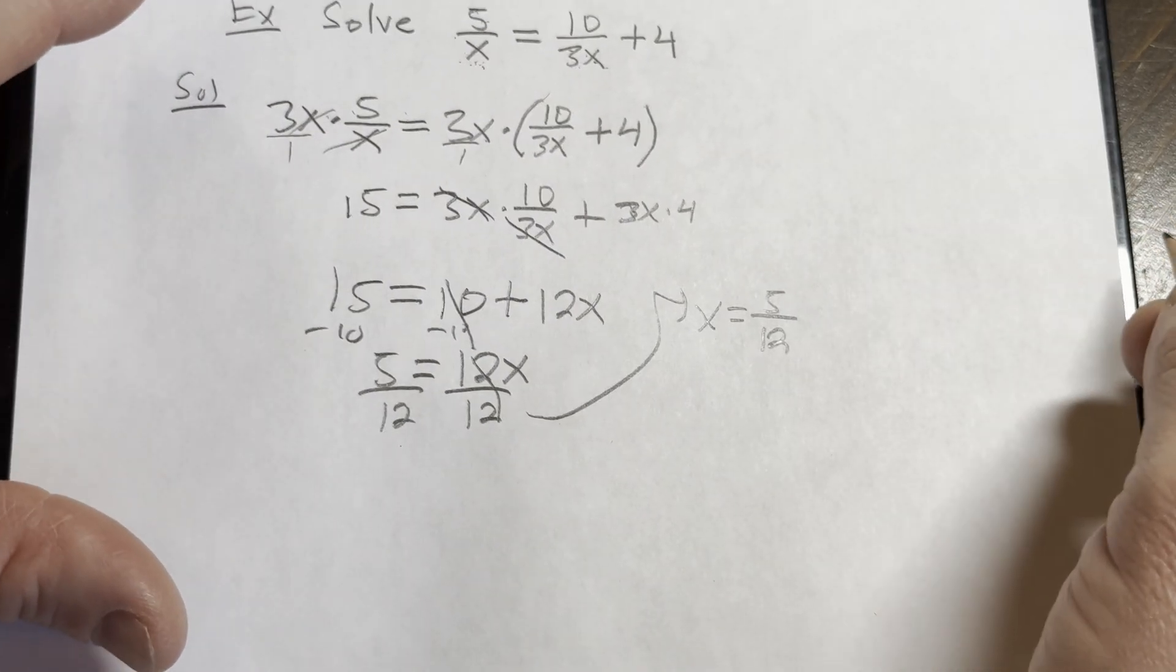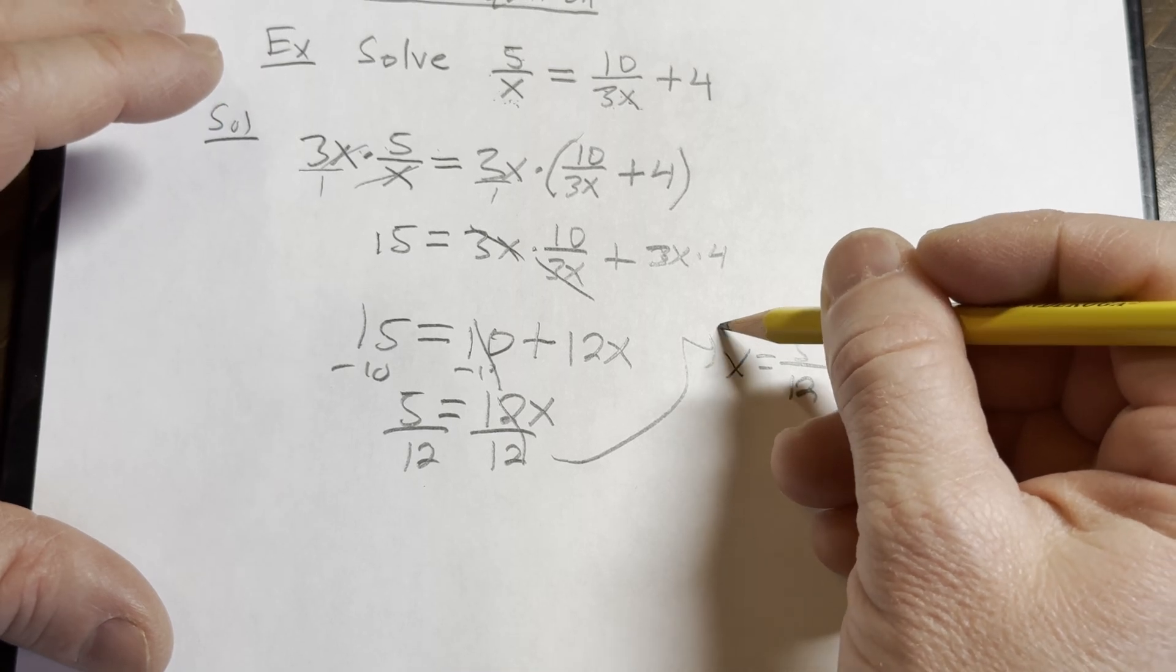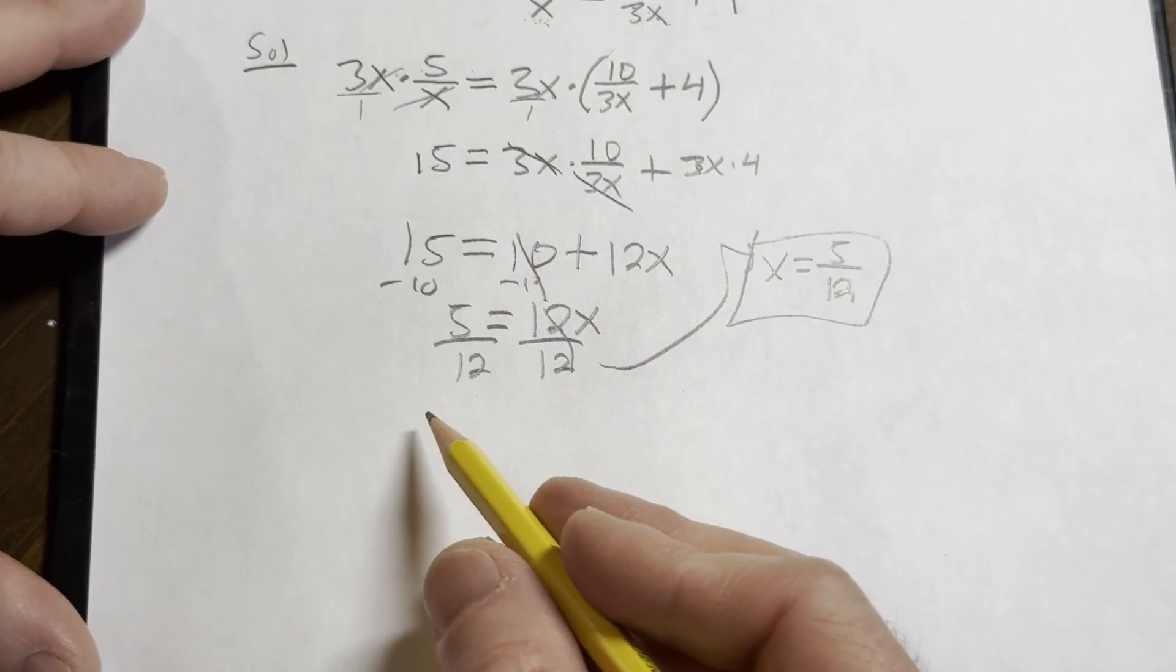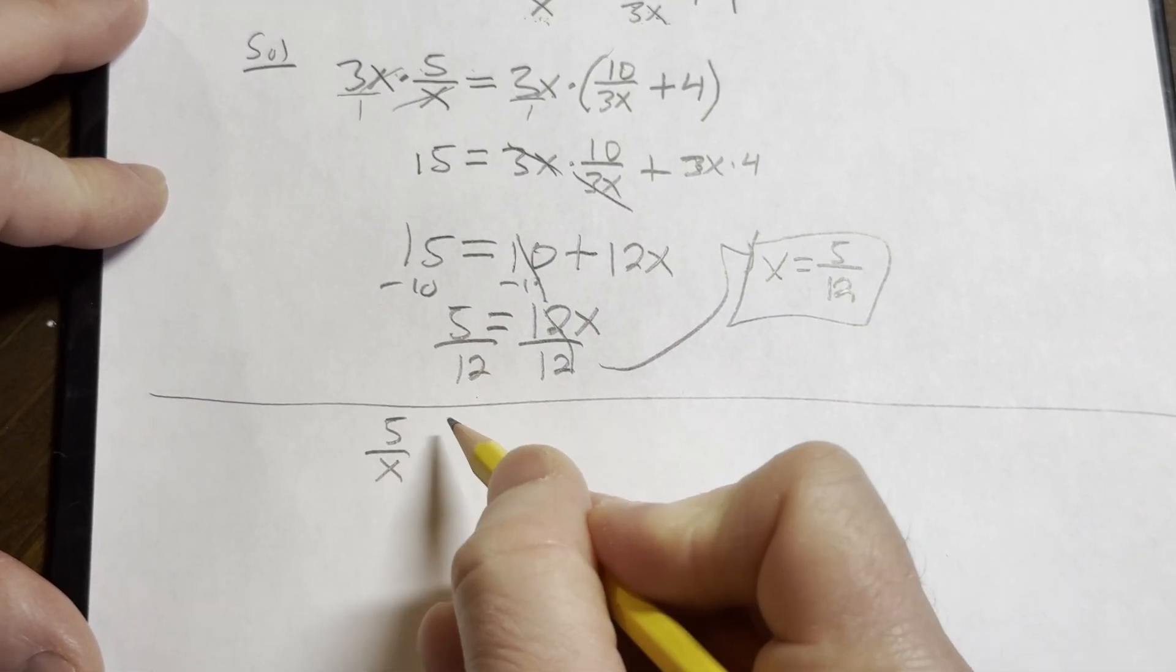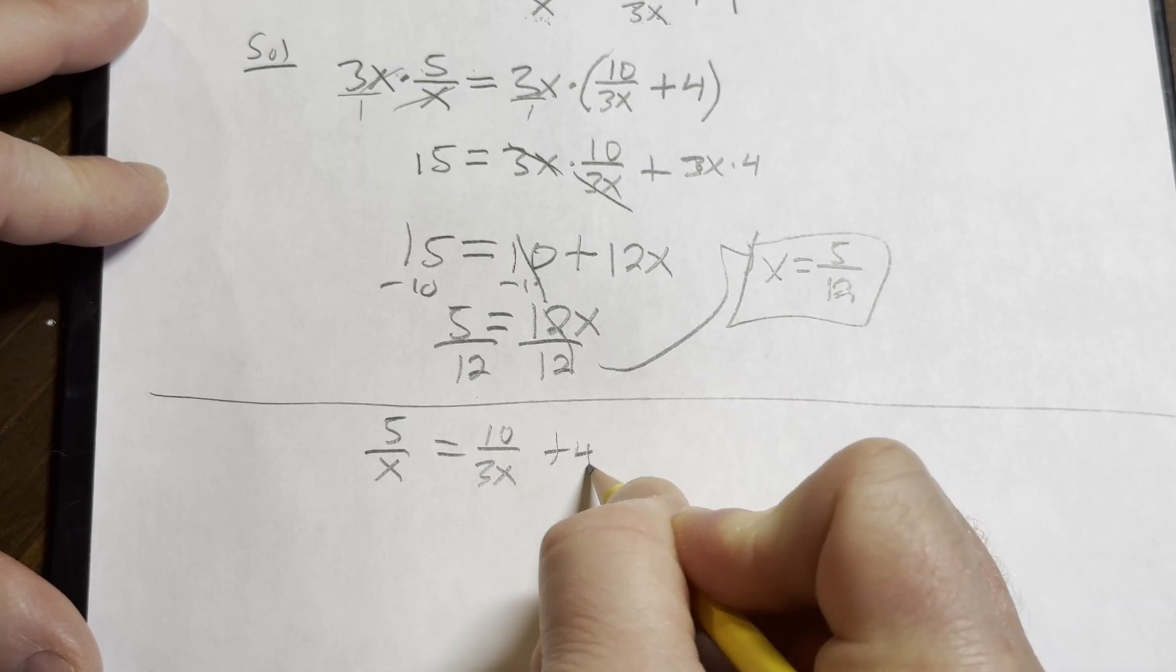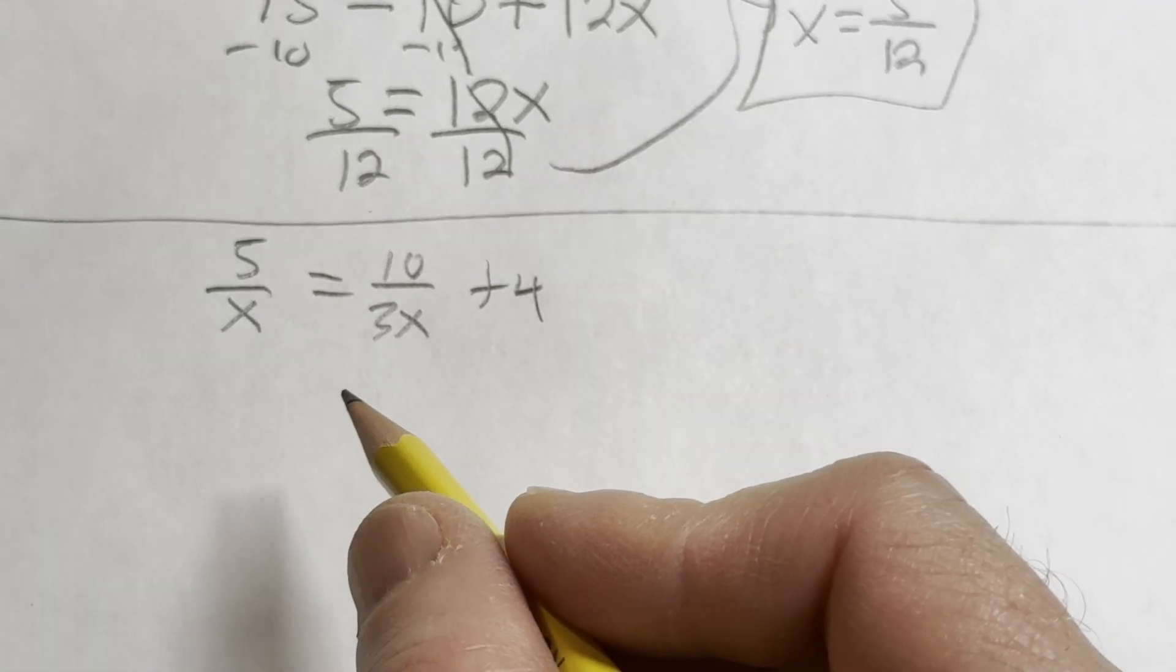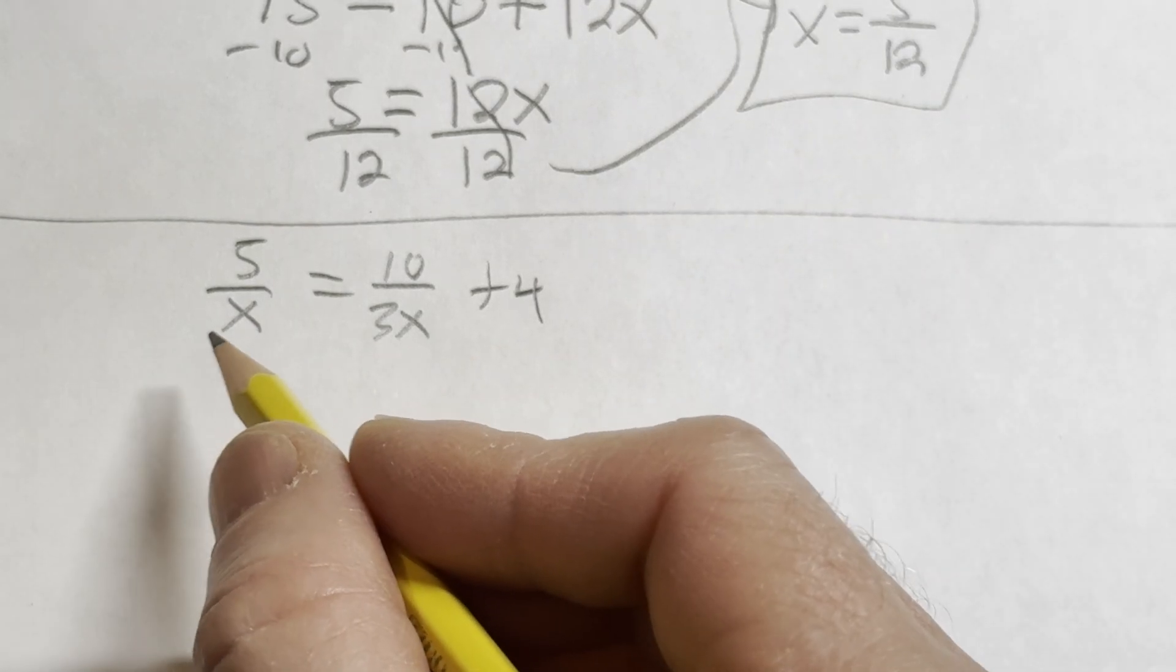And then here, dividing by 12 is going to give us x equals 5 over 12. And that should be the answer. We could check if we wanted to by taking this number and plugging it in. Let's do it. Let's go ahead and grind it out and do it. So I'm going to write it again down here. The original question was 5 over x equals 10 over 3x plus 4. And we're going to check that x equals 5 over 12 is a solution to this rational equation.